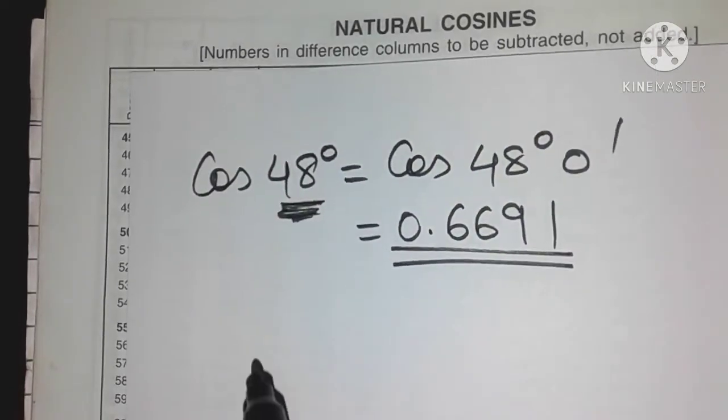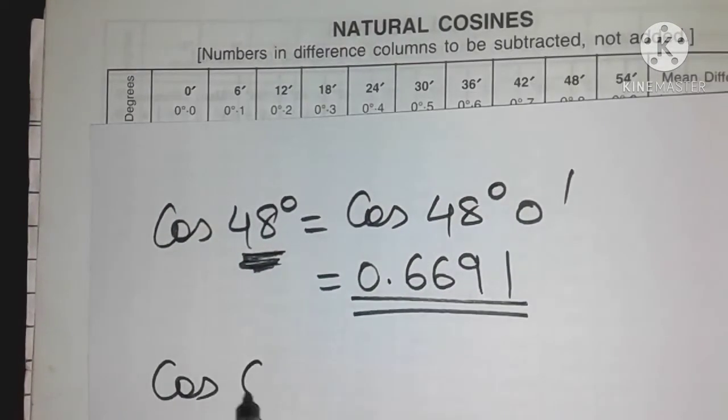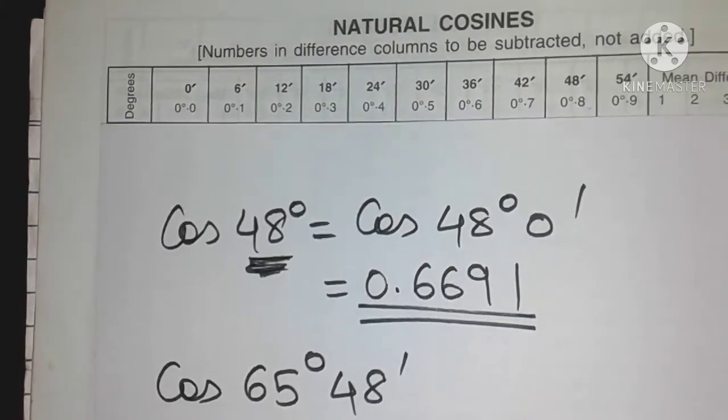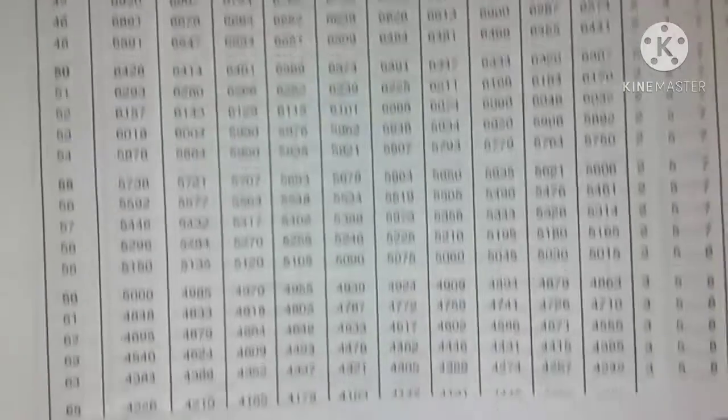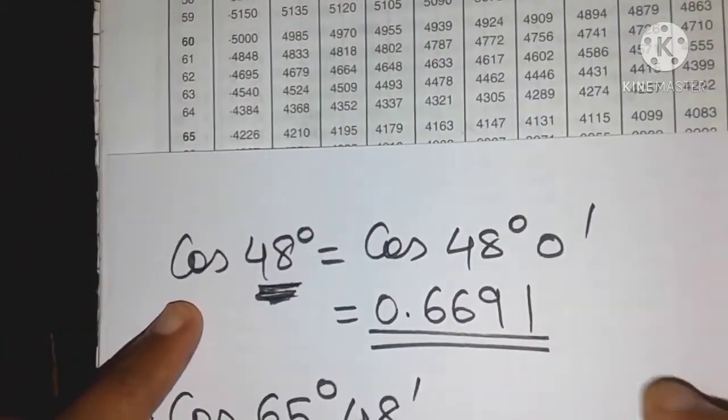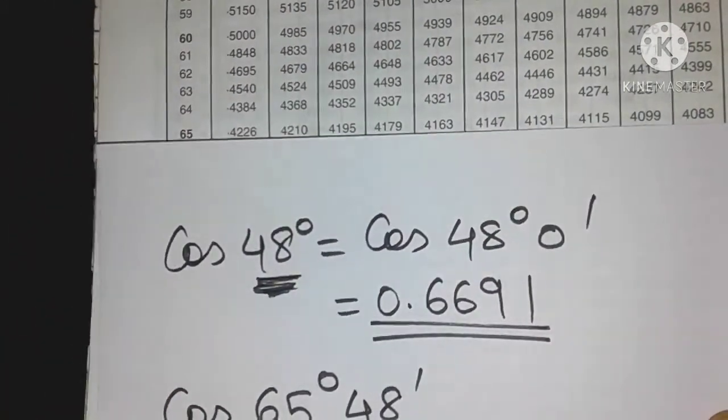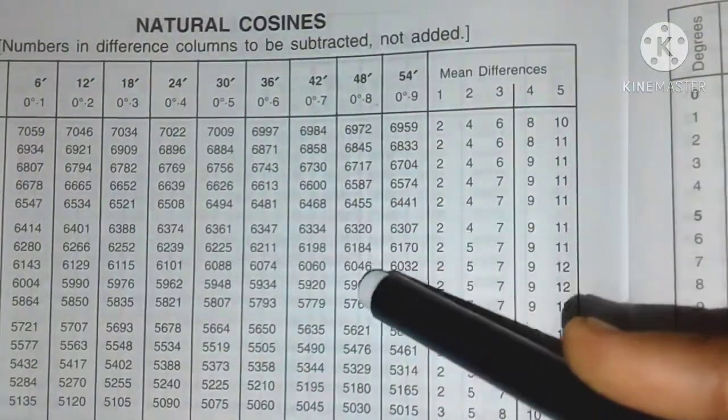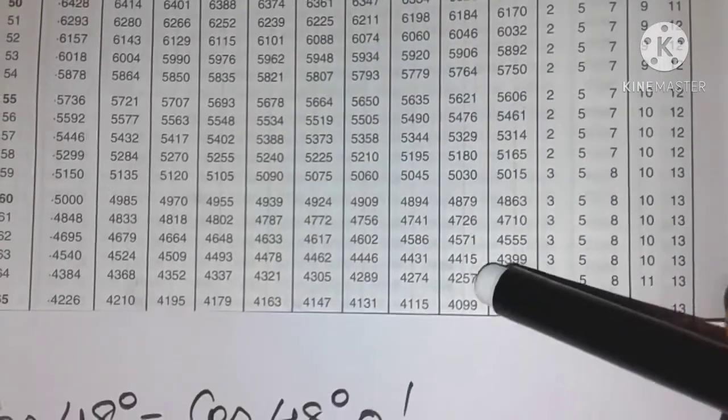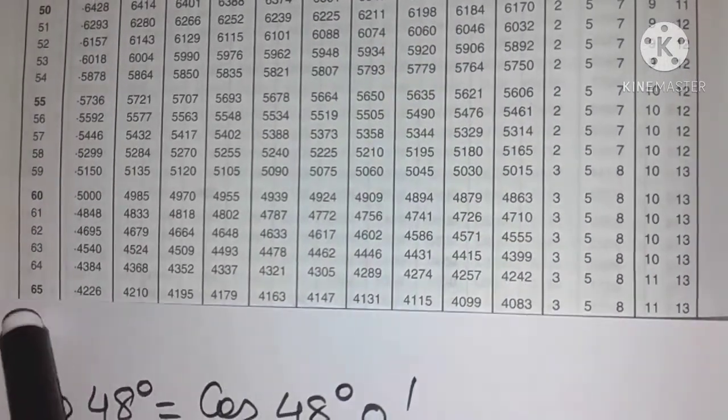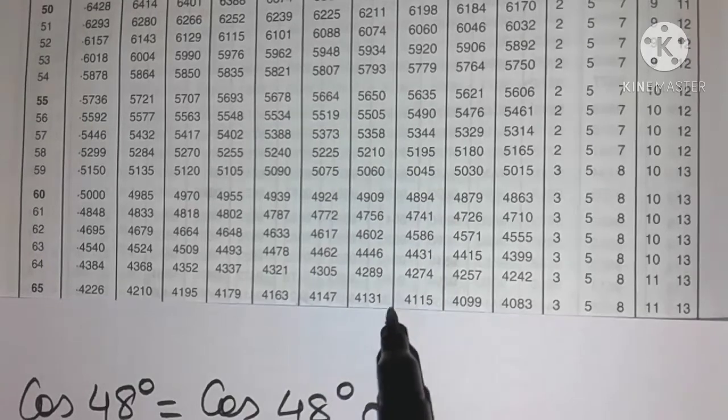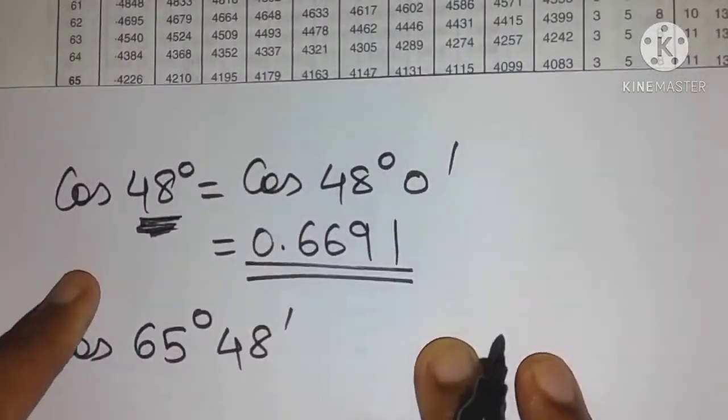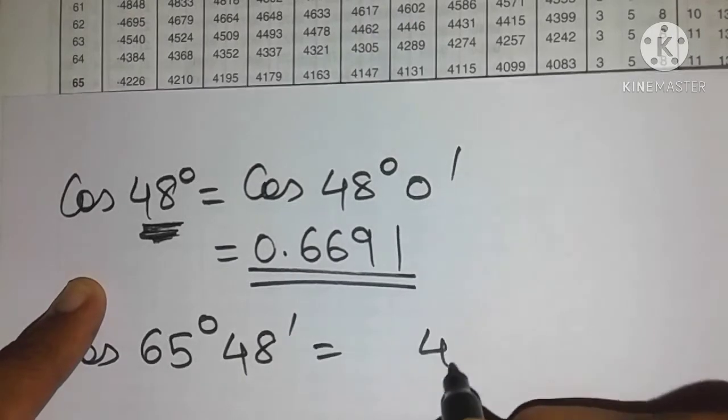Now suppose instead of 48 degrees I have an angle which has minutes attached to it, say 65 degrees 48 minutes. Now in that case let's first locate where is 65 degrees. Yes it's right over here. Now I look for 48 minutes. Now 48 minutes is over here. So just carefully look at the entry. What is the entry? 65 degrees 48 minutes. Yes it's 4099. So let's write that down. 4099.